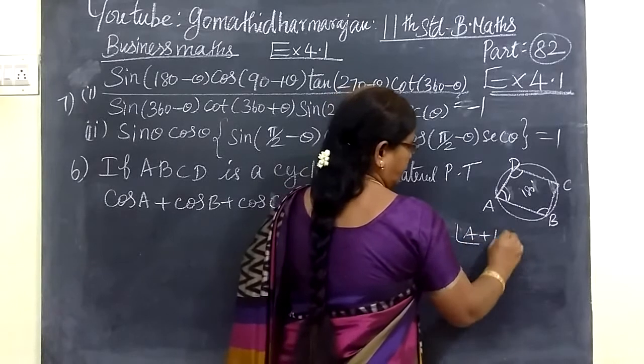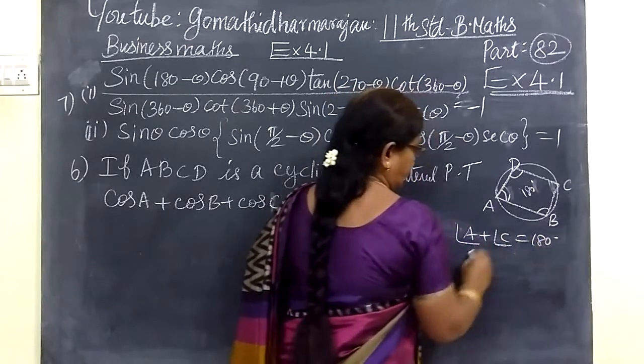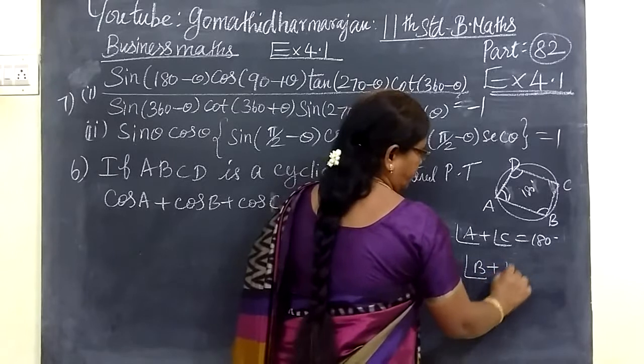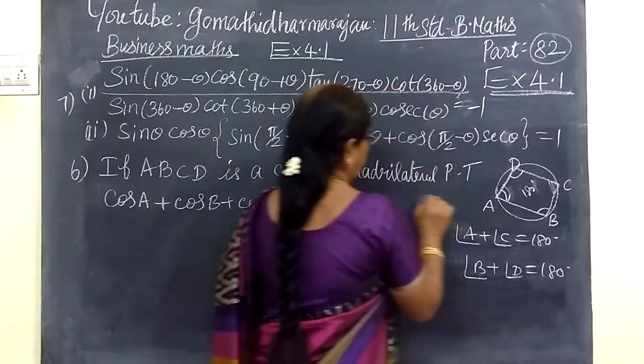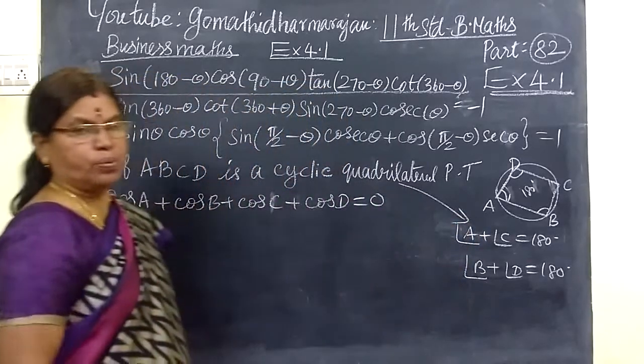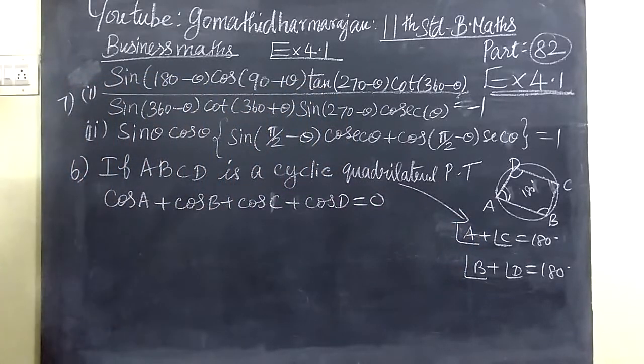Angle A plus angle C equals 180 degrees. Then angle B plus angle D equals 180 degrees. Since it is a cyclic quadrilateral, we know the sum of opposite angles equals 180 degrees.